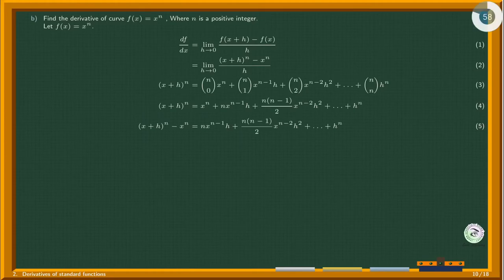Subtracting x^n from equation 4 gives equation 5. Pulling out a common factor h gets equation 6.